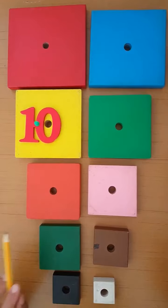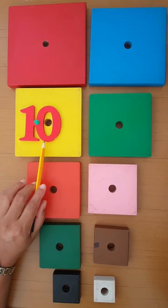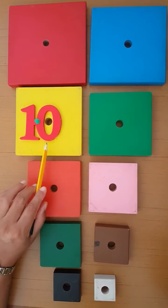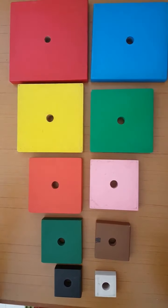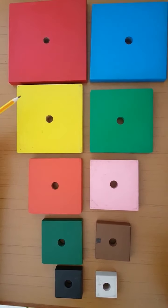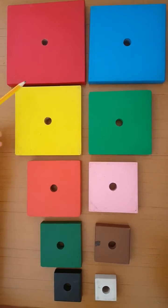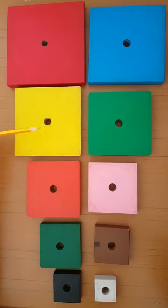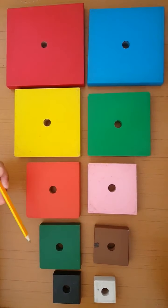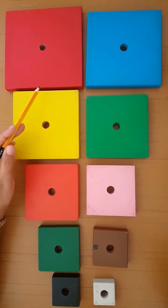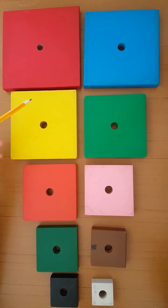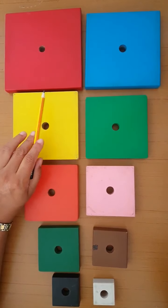So children, before pressing and writing number 10, first we will do one counting activity. And what we do in this activity? See, these are squares in different different colors and different different sizes. So children, you all are able to identify colors. So first we identify colors.